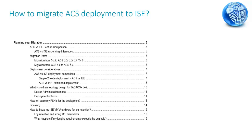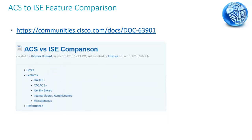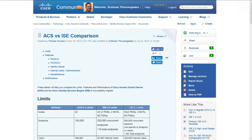The first topic in the planning section is the ACS to ICE feature comparison. Thomas Howard created a community link for this topic, and I have updated it with the latest information from the how-to guide for migration. This link is the go-to place for any ACS to ICE feature comparison. Let us briefly look at the different sections before opening the community page. The limits section talks about deployment limits, and the feature section compares underlying features between ACS 4.2, ACS 5.7, ICE 2.0, and ICE 2.1.